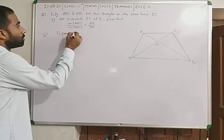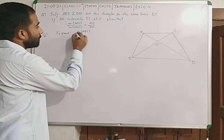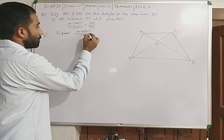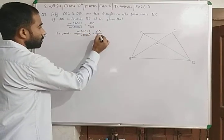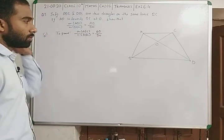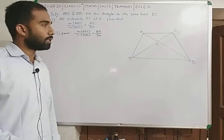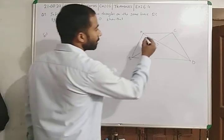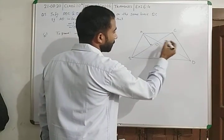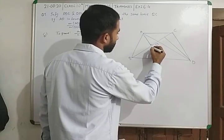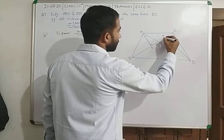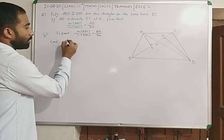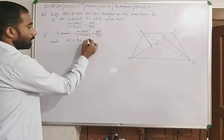To prove: area of ABC upon area of DBC is equal to AO upon DO. As you know, whenever we find area we need any perpendicular line, any altitude. So we will construct altitudes here. Let's name them S and T. We will construct two altitudes.